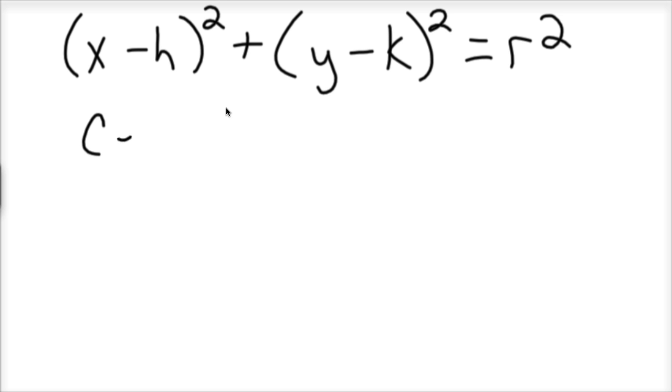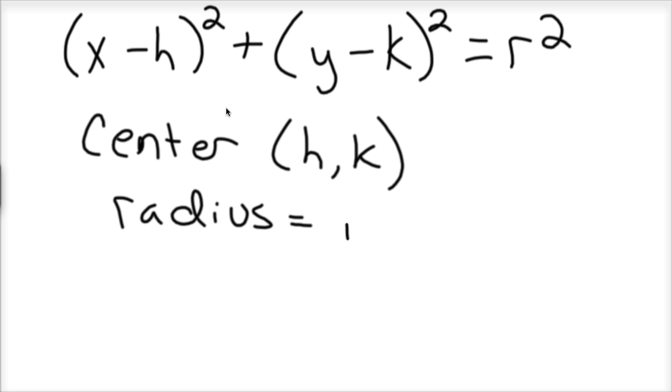So here's the general form of a circle. And so your center is (h,k), and your radius is the square root of r², or just r.